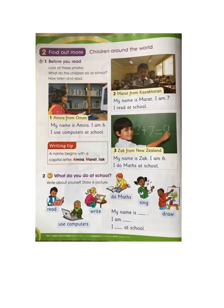Page number 12, Learner's Book. Look at these children. Where are these children? These children are in their school. Let's see what each child is doing in the school. In this page, we can see children from different countries.